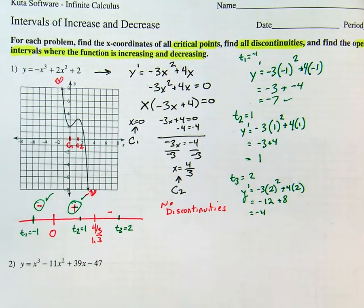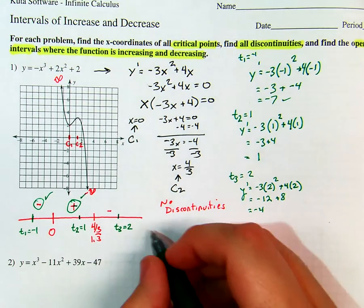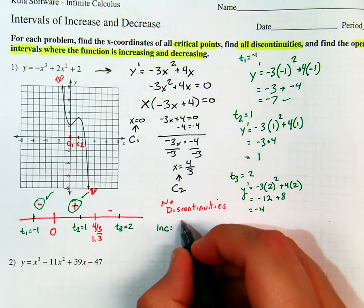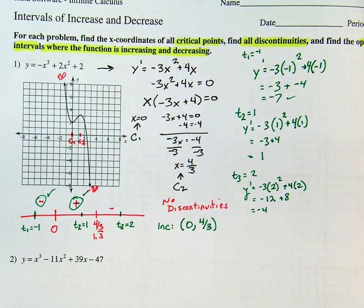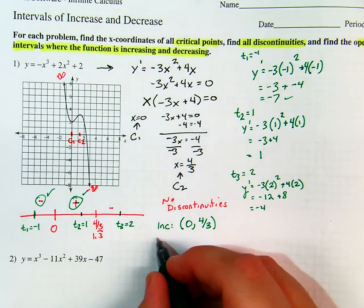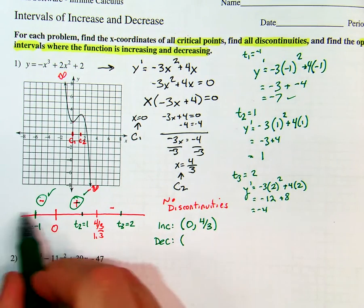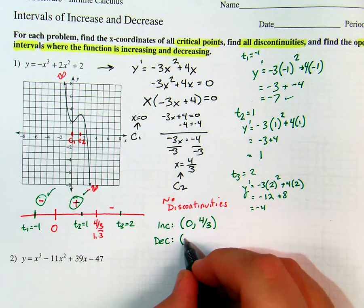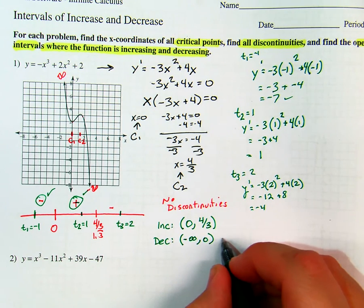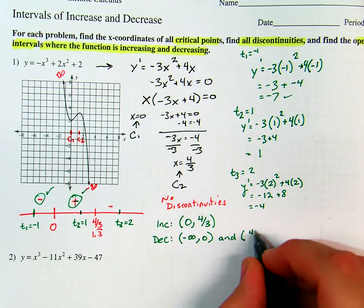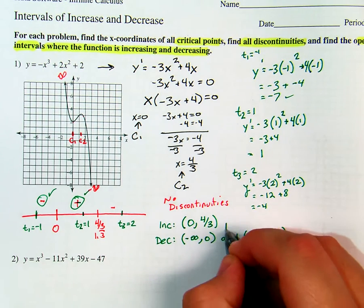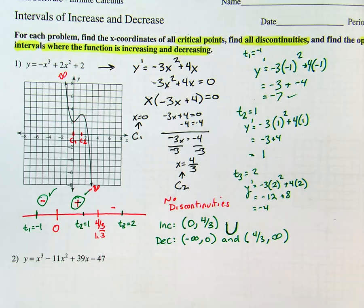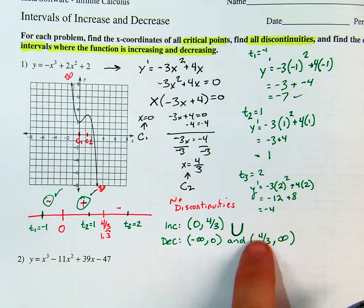Now we can tell what's increasing and what's decreasing. Increasing is on the open interval from 0 to 4 thirds. Decreasing is on negative infinity to 0, and 4 thirds to infinity — you can use the union symbol to combine those two together.